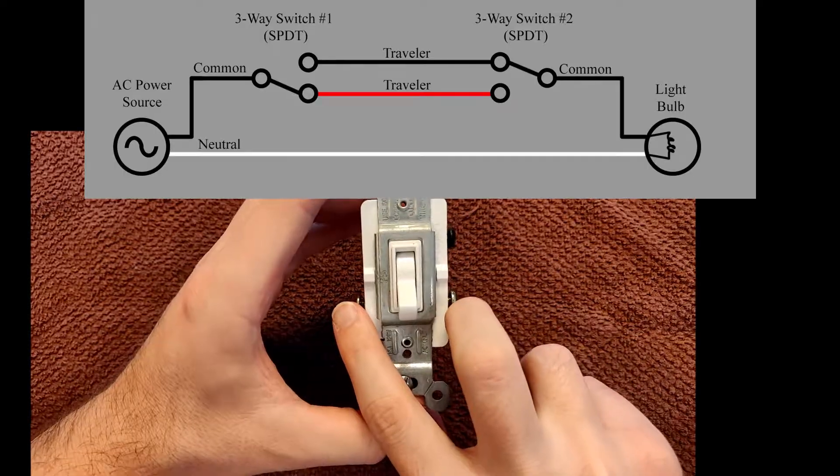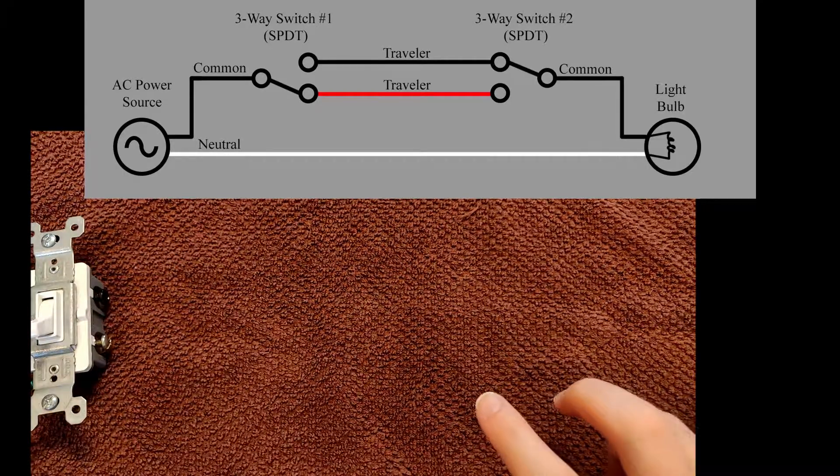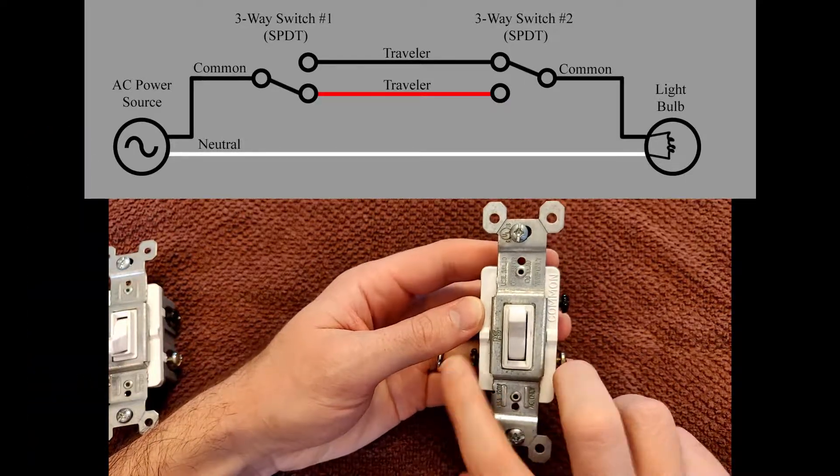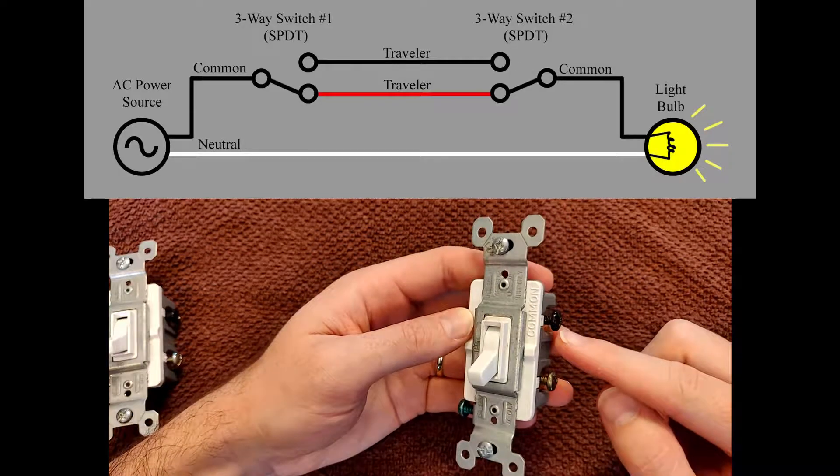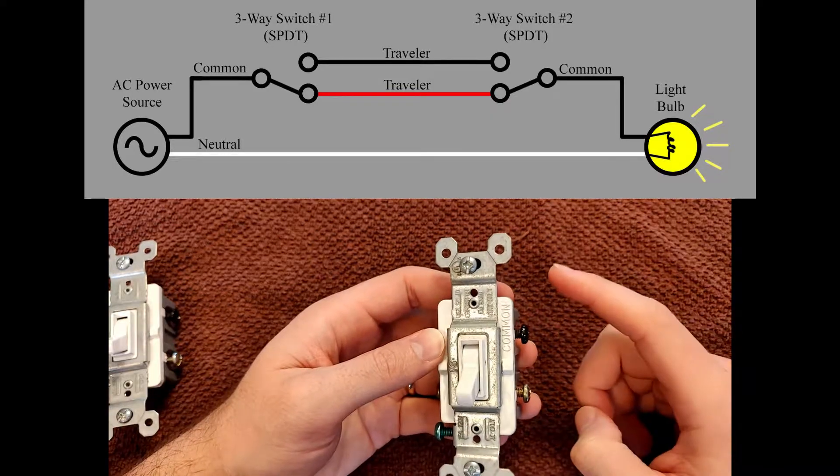This will then travel from this switch through the wires in the wall over to a second three-way switch. Those two hots will come onto this switch. Then depending on which way this switch is flipped, it will send this common screw power, and then the power gets from this common screw over to your light fixture.